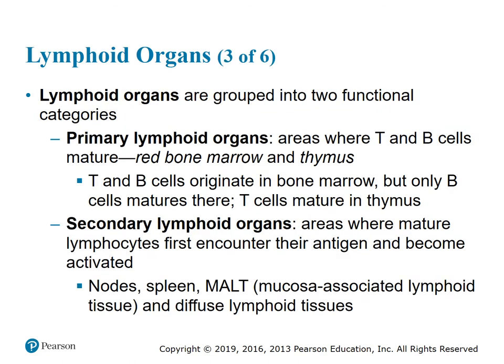Lymphoid organs are grouped into two functional categories. Primary lymphoid organs are areas where T and B cells mature, such as the red bone marrow and the thymus. T and B cells originate in the bone marrow, but only B cells mature there; T cells mature in the thymus gland. Secondary lymphoid organs are areas where mature lymphocytes first encounter their antigen and become activated — examples include the lymph nodes, the spleen, MALT (mucosa-associated lymphoid tissue), and diffuse lymphoid tissues.